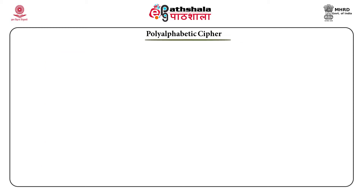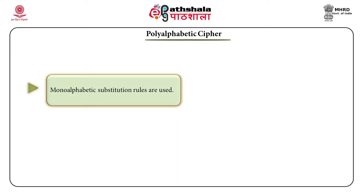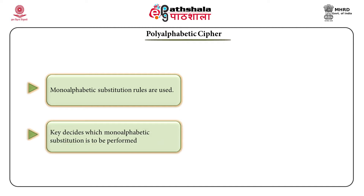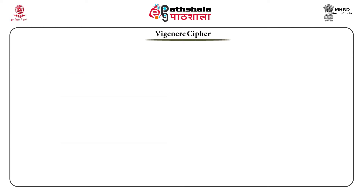A polyalphabetic cipher has two rules: monoalphabetic substitutions are used, but the key decides which monoalphabetic substitution is to be performed. To give you an example, we will start with the Vigenère cipher.